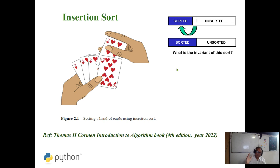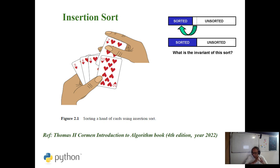Remember, in selection sort the complexity in the best case is also O(n²). In insertion sort or bubble sort, we just check whether an almost sorted or fully sorted array is there, and it will take just O(n). Even bubble sort and even insertion sort are O(n) in the best case, but in selection sort it will always be O(n²).